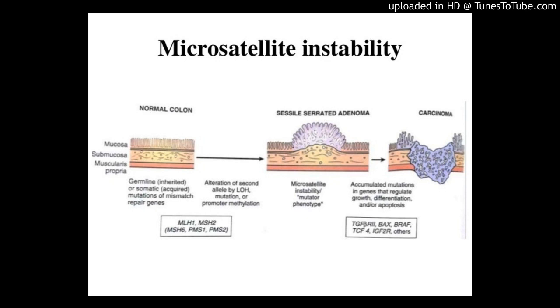Most common pattern of MSI-H tumors was loss of expression of MLH-1 and PMS-2, seen in 15 of 16 (88%) of Stage 2 and 3 of 6 (50%) of Stage 3 CRC, P equals 0.04.